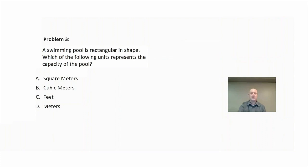So when we're talking about capacity, we're talking about volume. In this case, it says that the swimming pool is rectangular in shape. So the volume of a rectangular prism would be length times width times height. So we have three dimensions here. Feet and meters are just measuring in one dimension, so I'm going to eliminate those choices.